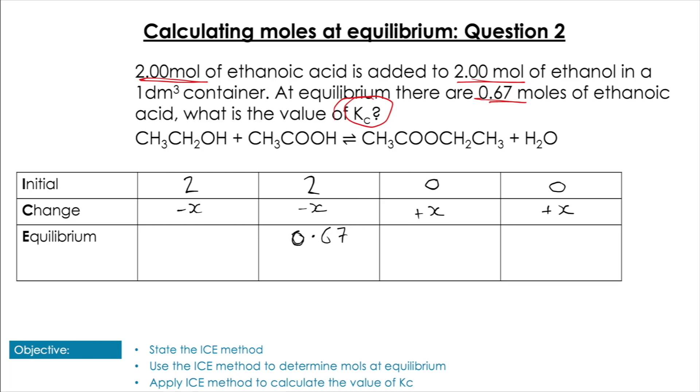We solve for x using ethanoic acid: 2 - x = 0.67, so x = 1.33.